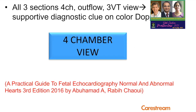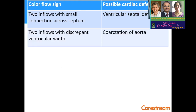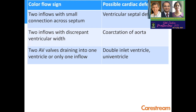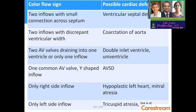From the book by Abu Ahmed and Rabi Shaivi, color flow signs and possible cardiac defects are described. In the four-chamber view: two inflows with a small connection across the septum is a VSD; two inflows with discrepant ventricular width is most commonly coarctation of the aorta. Two AV valves draining into one ventricle or only one inflow indicates double inlet ventricle or univentricle. A common AV valve or Y-shaped inflow is an AVSD. Only right-sided inflow is hypoplastic left heart or mitral atresia. Only left-sided inflow is tricuspid atresia or PA-IVS.